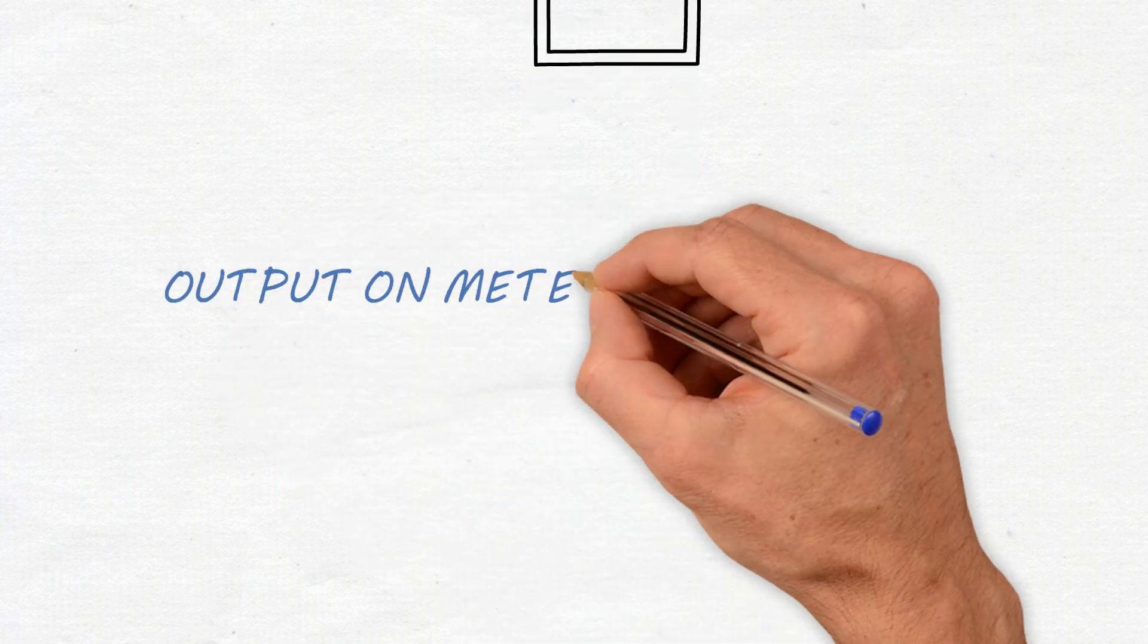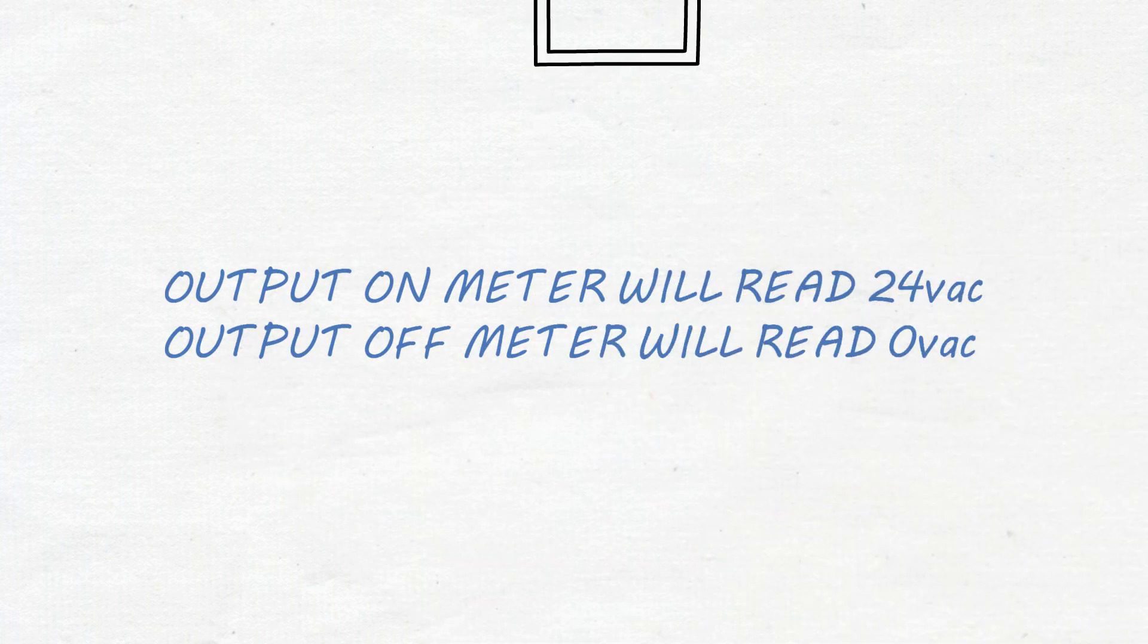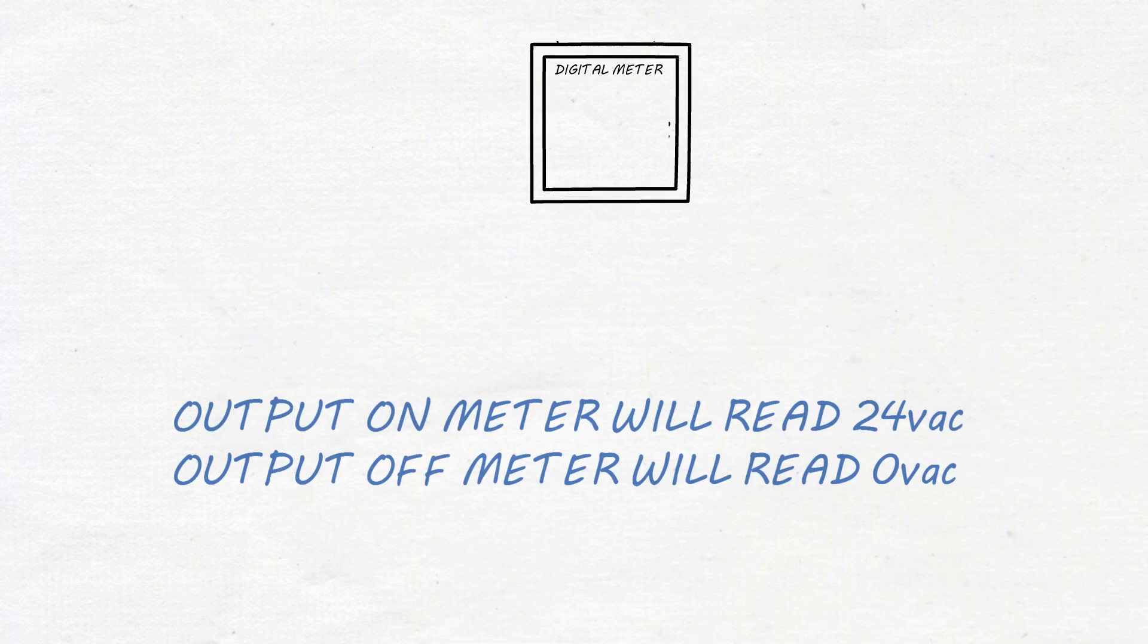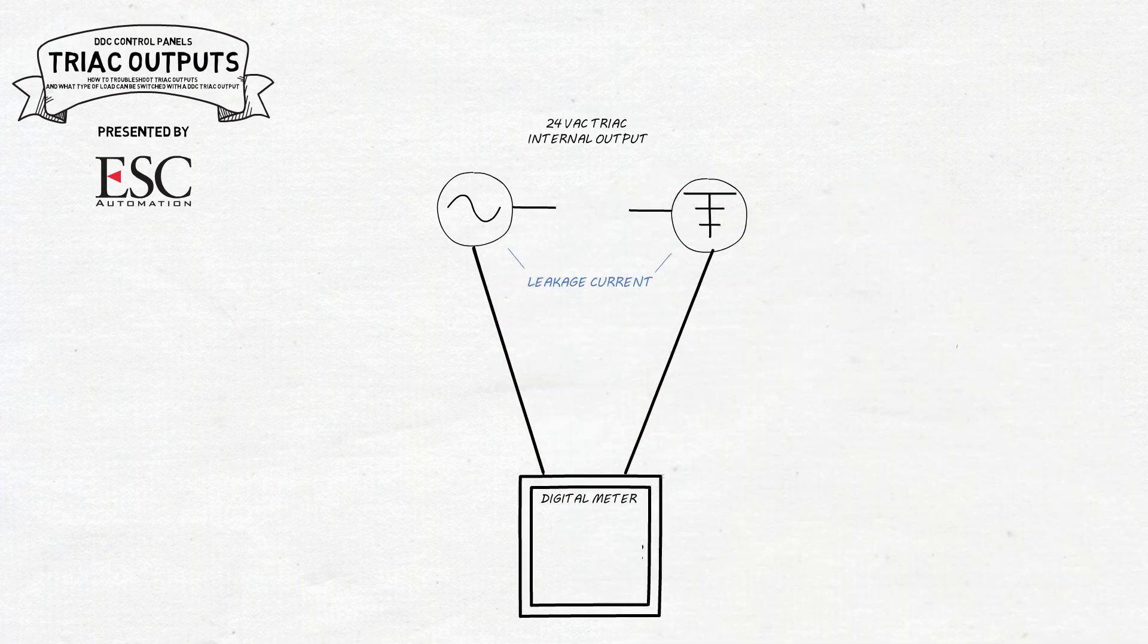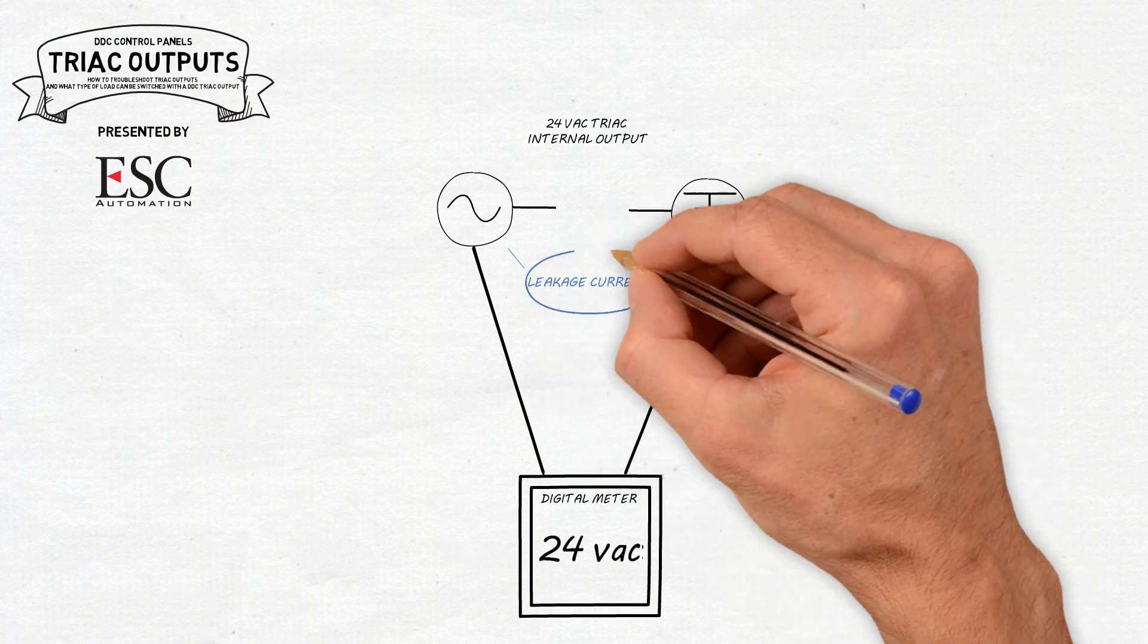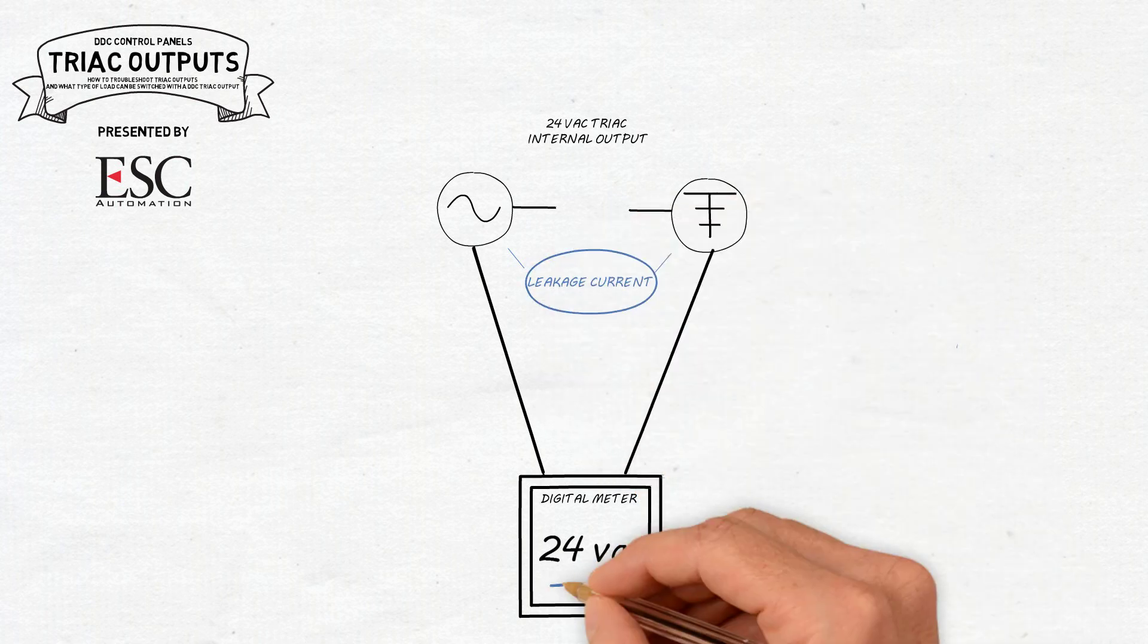The following will occur. Problems come up and become confusing when the load is removed and a tech reads the output voltage directly wired to the triac. Triacs will have a leakage current that will happen when the load has a high resistance as a digital meter has.